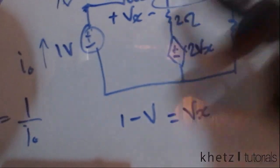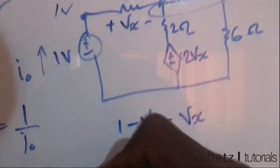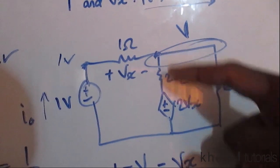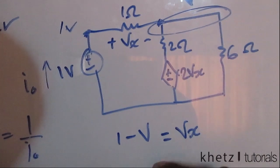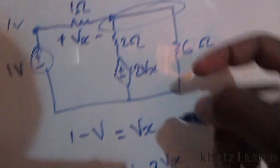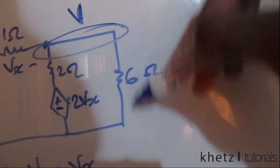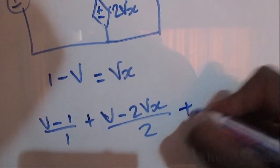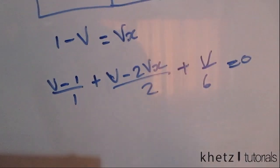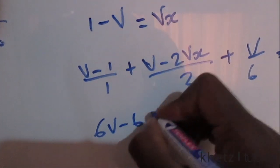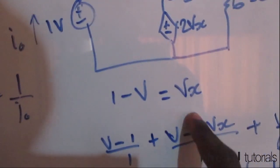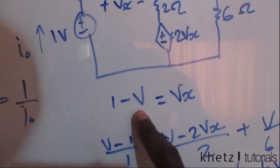Now we apply nodal analysis at node v. The KCL equation is: (v minus 1)/1 plus (v minus 2vx)/2 plus v/6 equals zero. Multiplying through by six gives: 6v minus 6 plus 3v minus 6vx plus v equals zero.